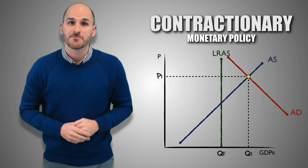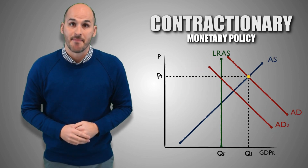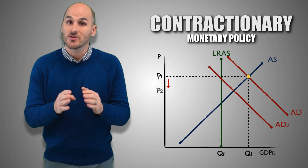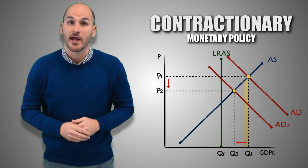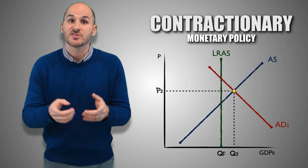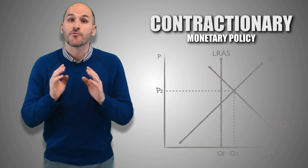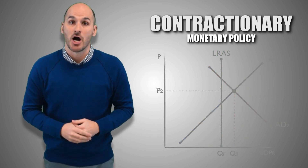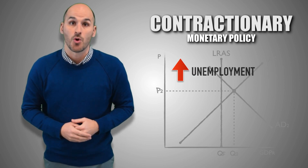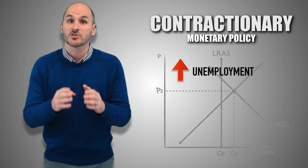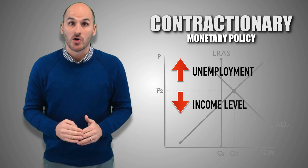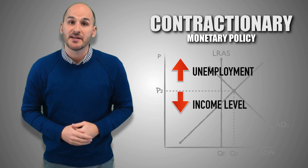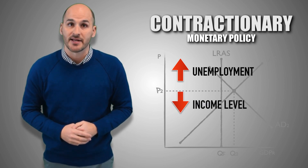The decrease in investment spending reduces aggregate demand and signals to firms across the economy that they need to decrease the quantity of products that they supply to adjust for a lower demand. In order to scale back output production, firms will eliminate jobs, and some workers become unemployed. With less workers earning a wage for their labor, income levels fall, leading to a wave of decreased spending in the aggregate economy.